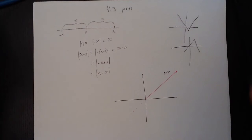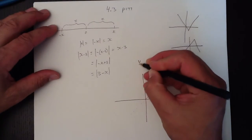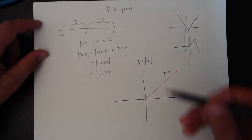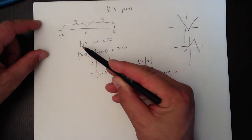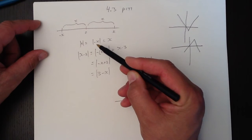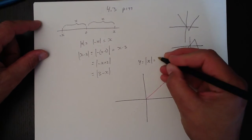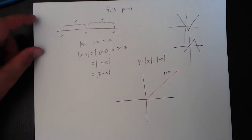But, if I'm trying to graph the function y equals the absolute value of x, and we take what we've learned here, where the absolute value of x is also the absolute value of negative x, then that also equals the absolute value of negative x.